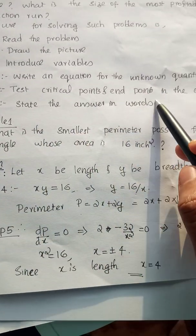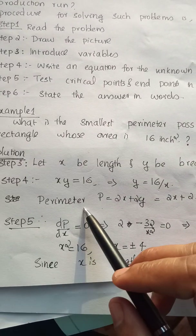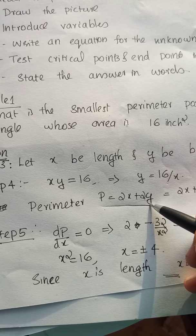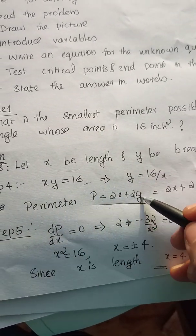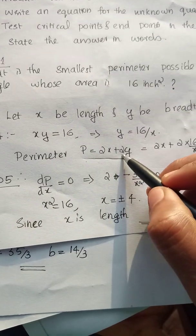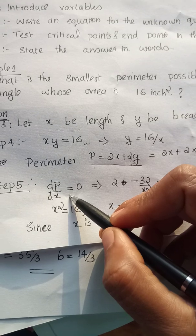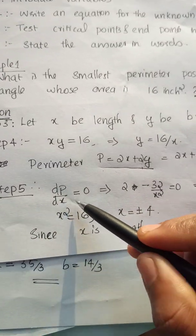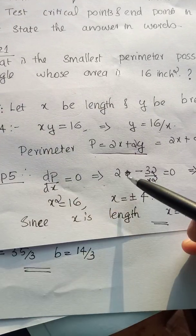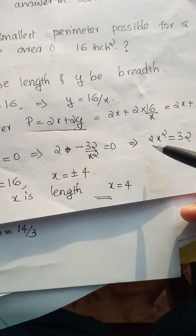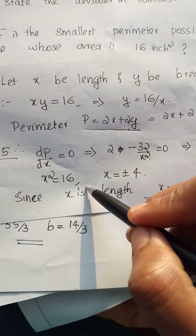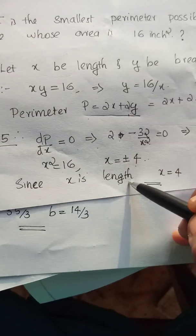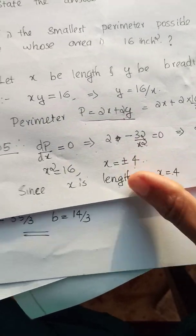Step 5 is to test the critical points and endpoints in the domain. Setting the derivative equal to zero: 2 minus 32 over x squared equals 0. So 2x squared equals 32, which gives x squared equals 16, and therefore x equals plus or minus 4. Since x is a length, the negative value is excluded, so we take x equals 4.